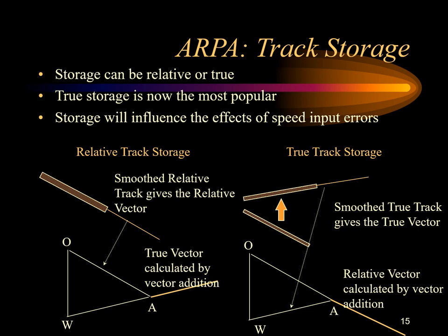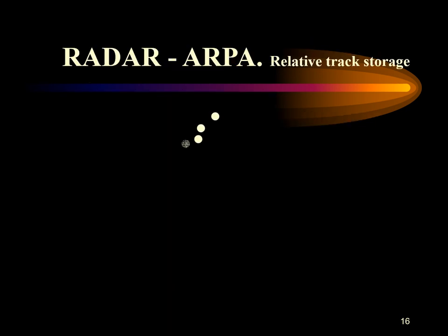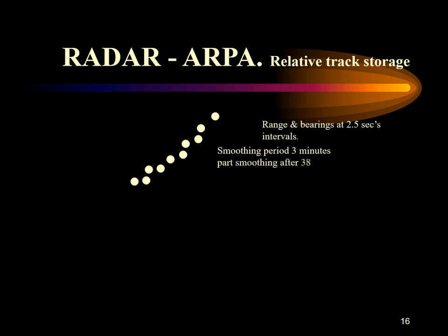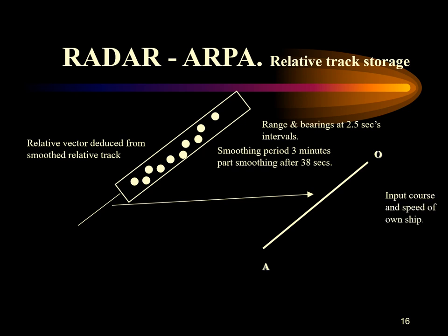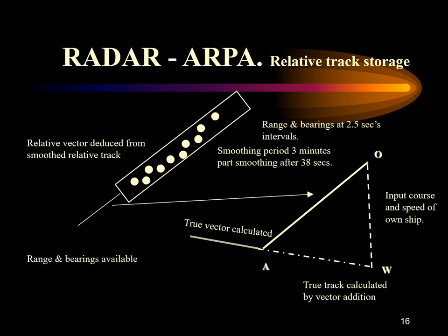Track history is stored to determine the vectors and can be either relative or true storage, with the most popular technique being true track storage. With relative track storage, the smooth relative track is stored and used for the relative vector display. The true vector is calculated from the stored relative track plus OwnShip course and speed input. Any error in heading or speed will cause an error in the true vector only.